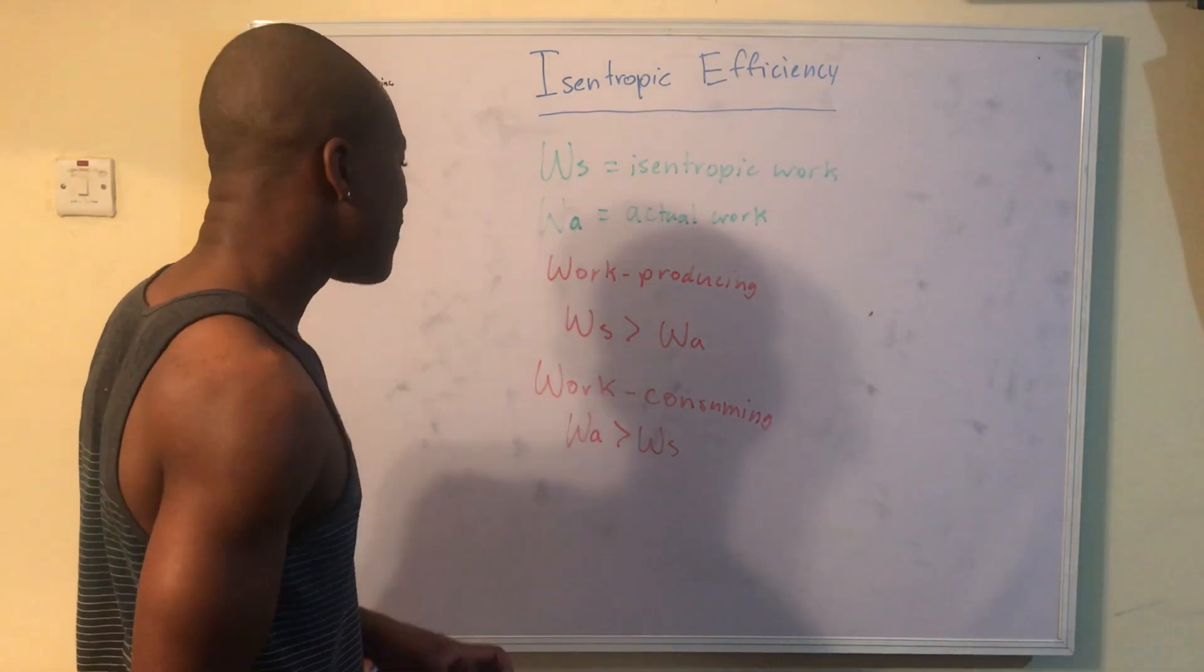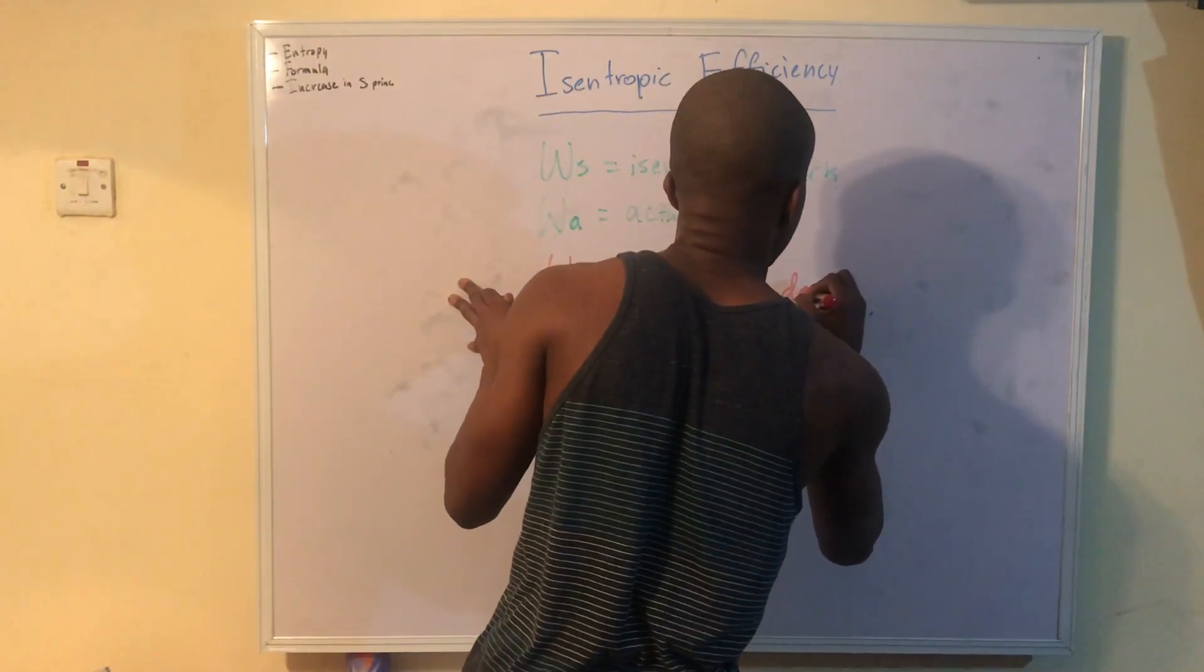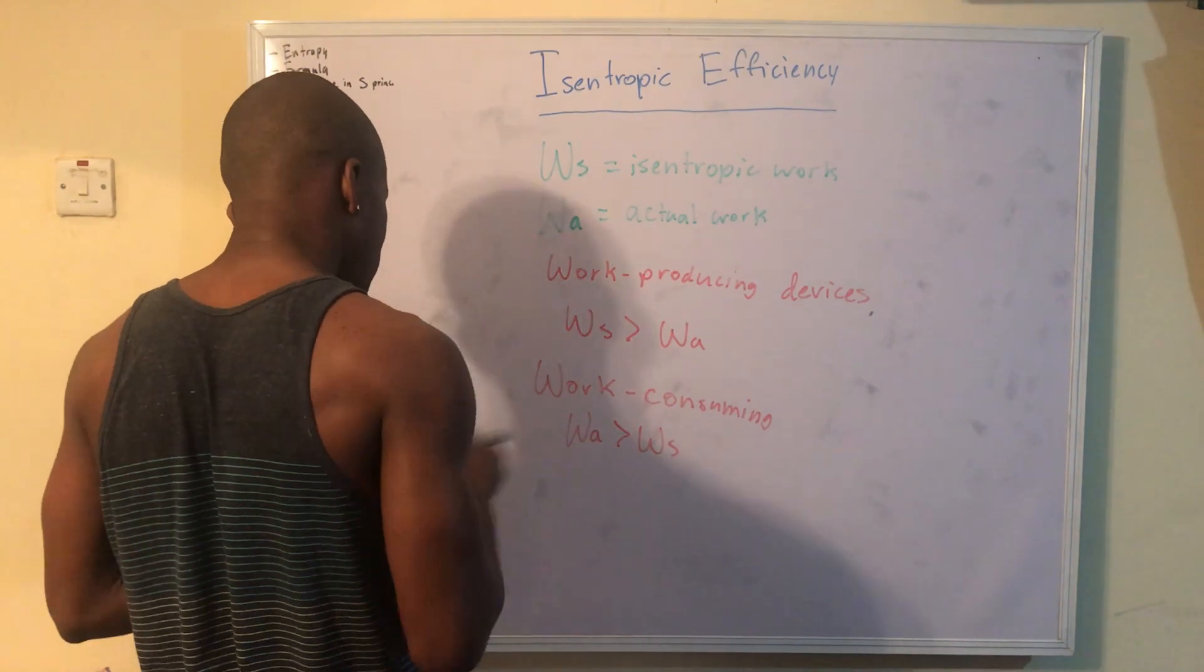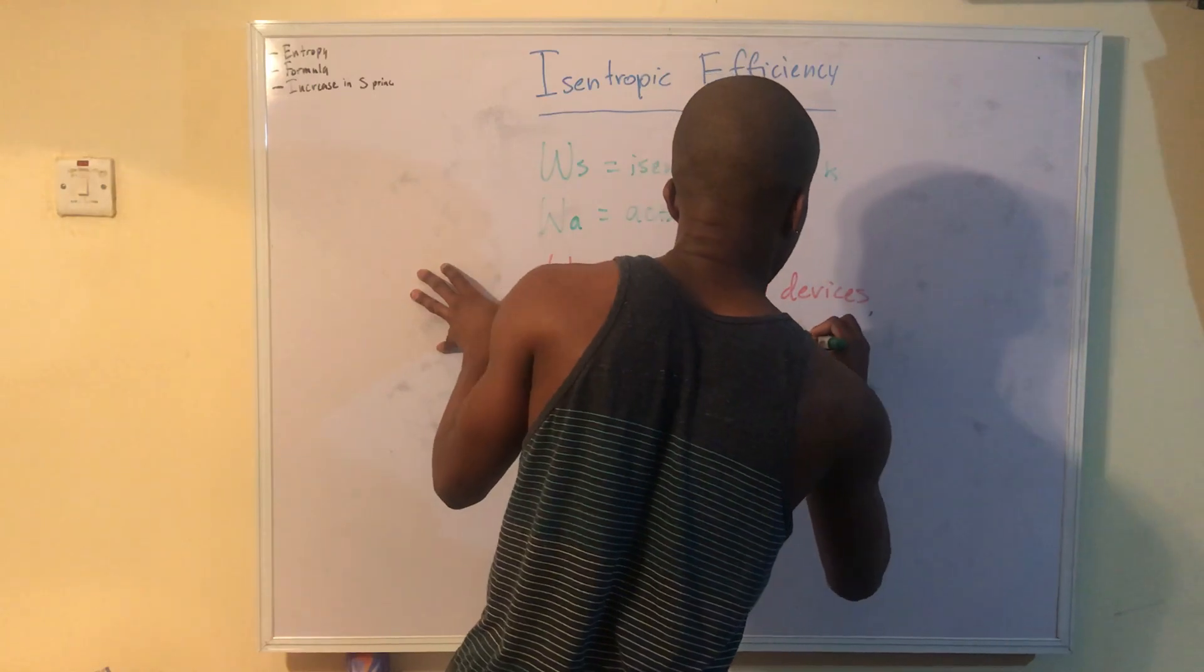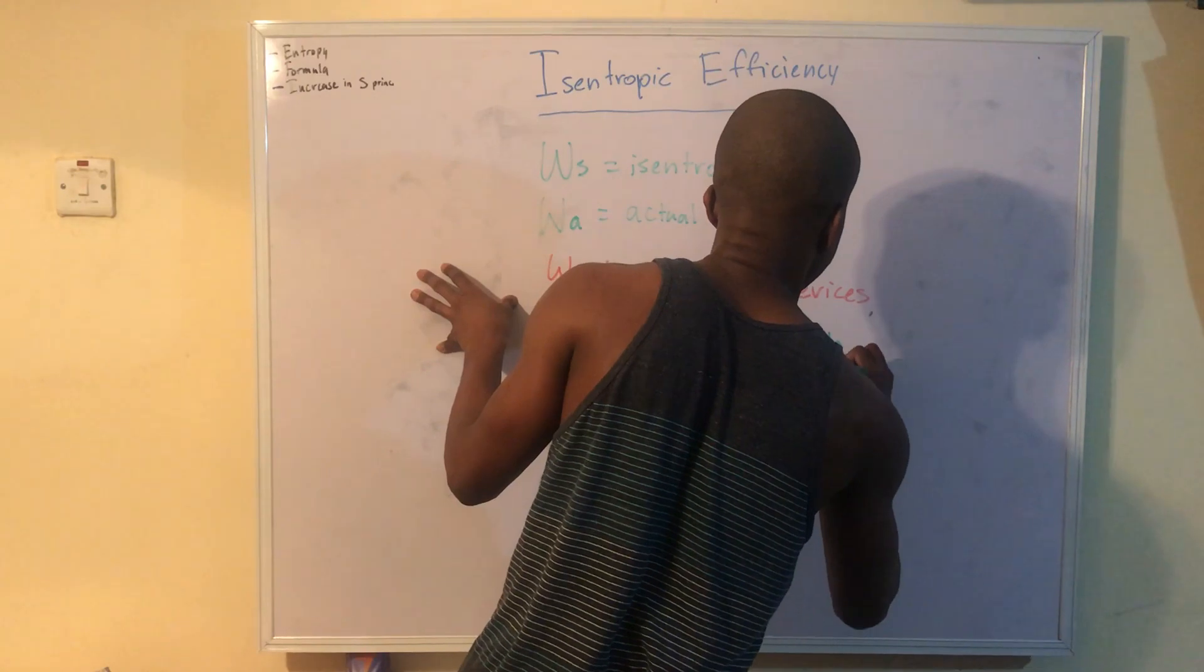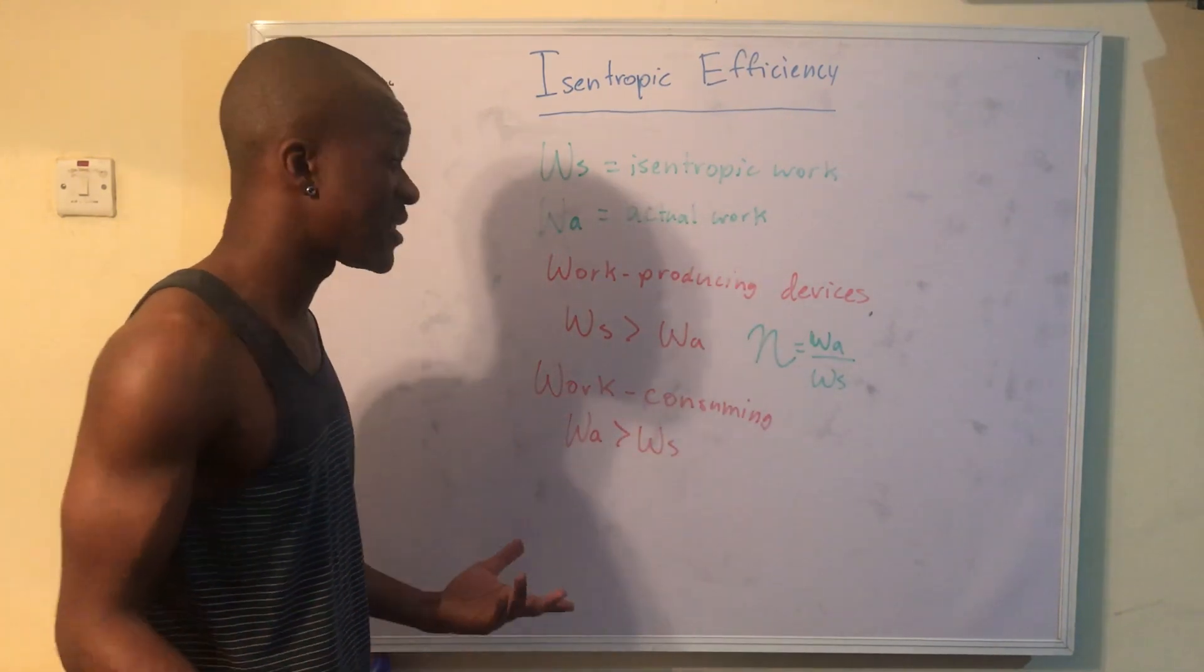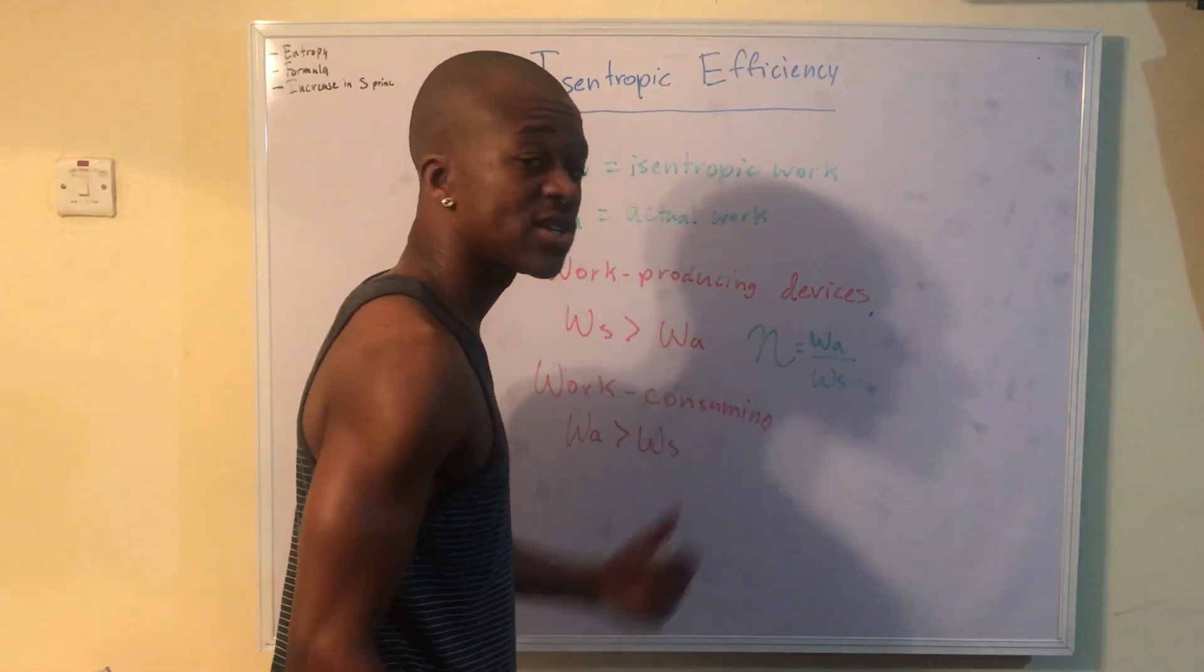So that's the way I remember it. Now, basically, we have these things called isentropic efficiencies. And these will be given to you based on the certain devices that we're talking about. For work-producing devices, we're going to find that isentropic efficiency is going to be this. And this is sort of just an intro. And the way I remember this is that, basically, efficiency is always going to be less than one. So because that work-actual is less than work-isentropic, it's going to be at the top. That work-actual is going to remain at the top.